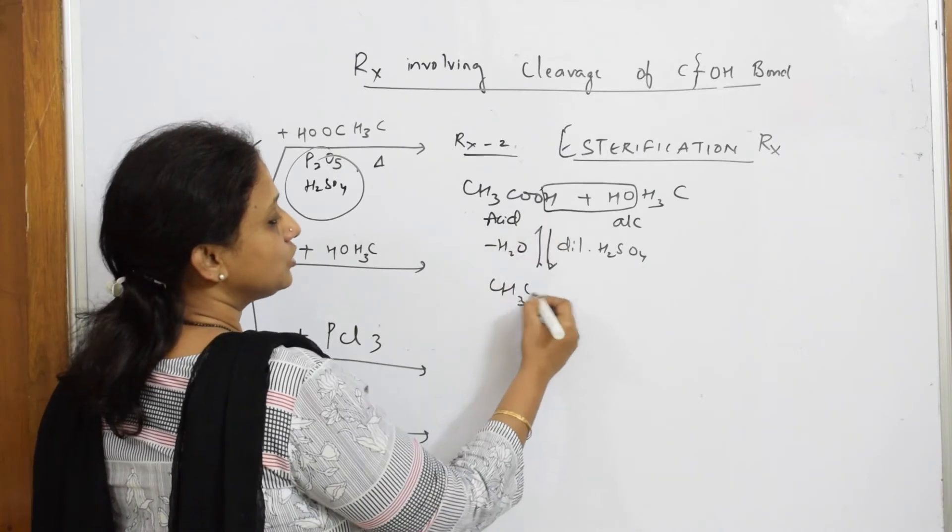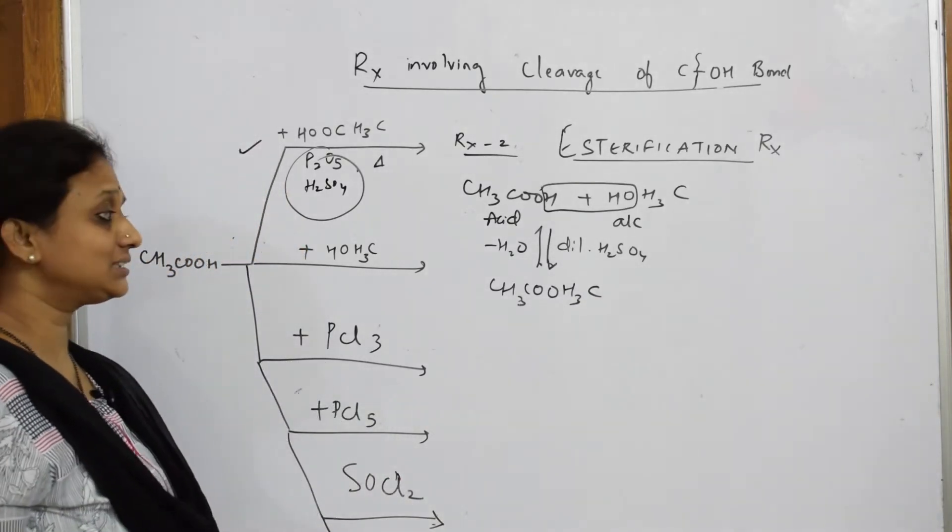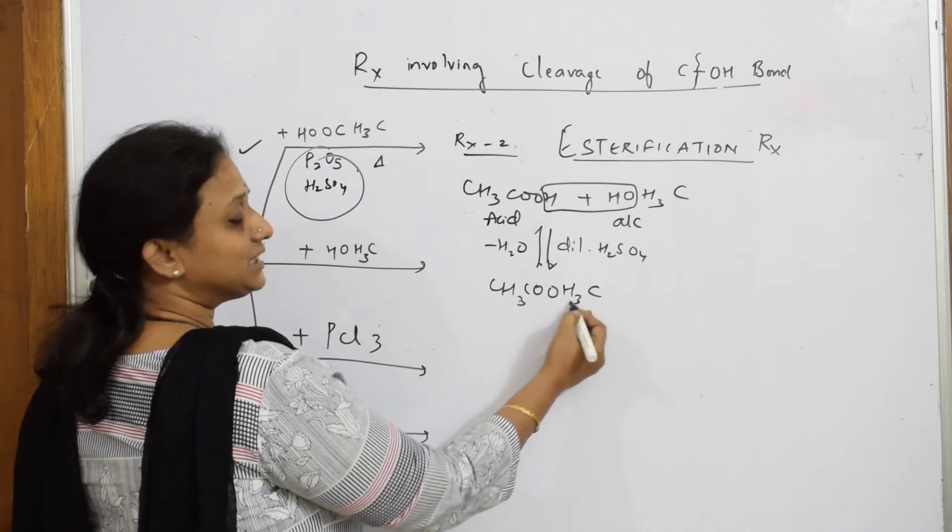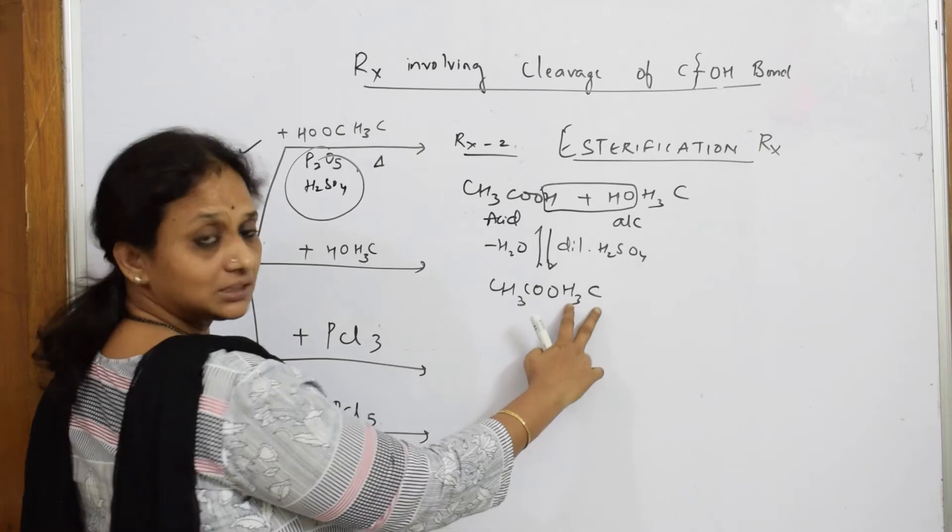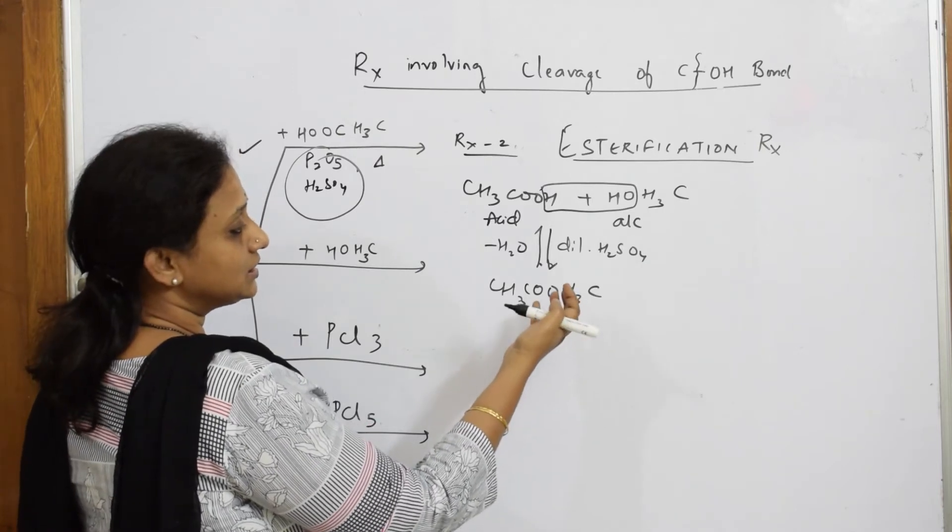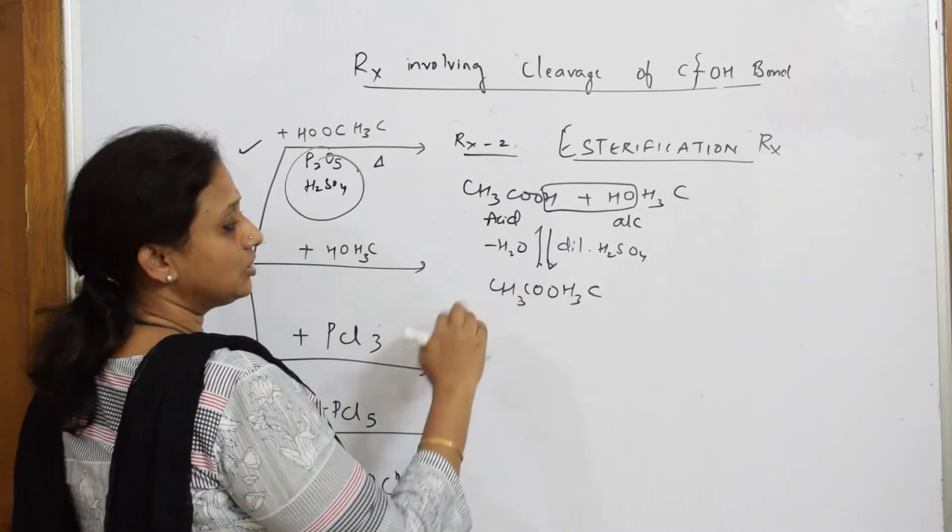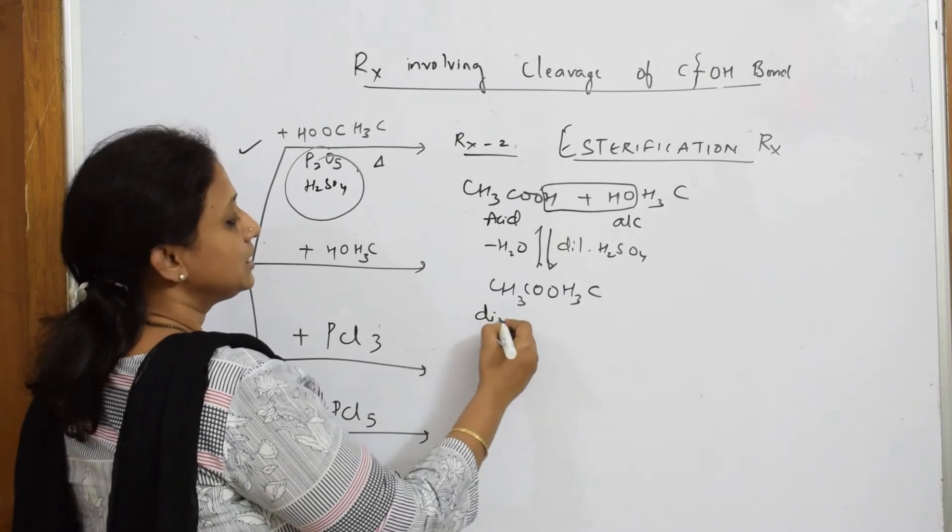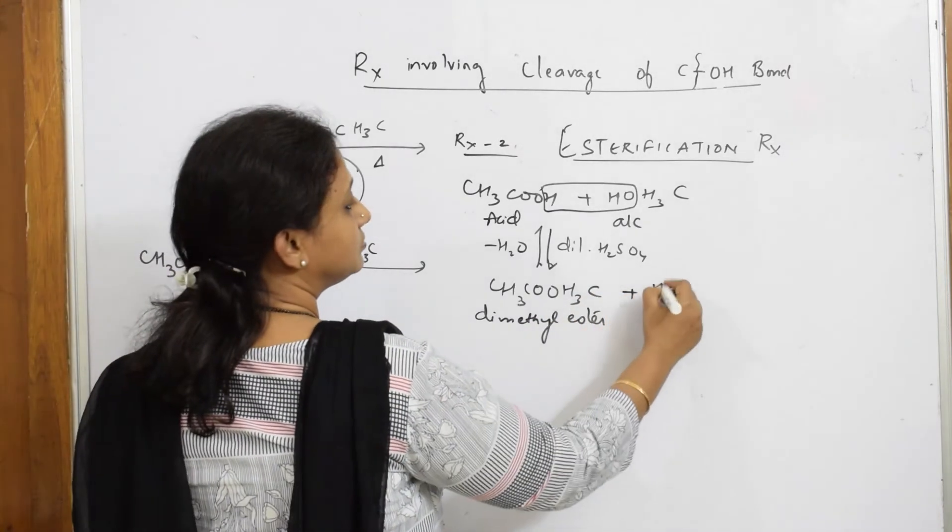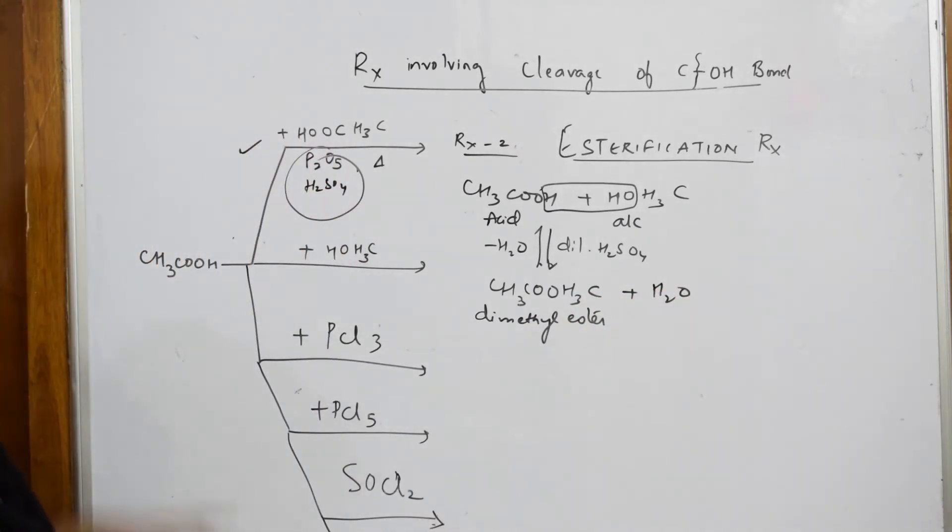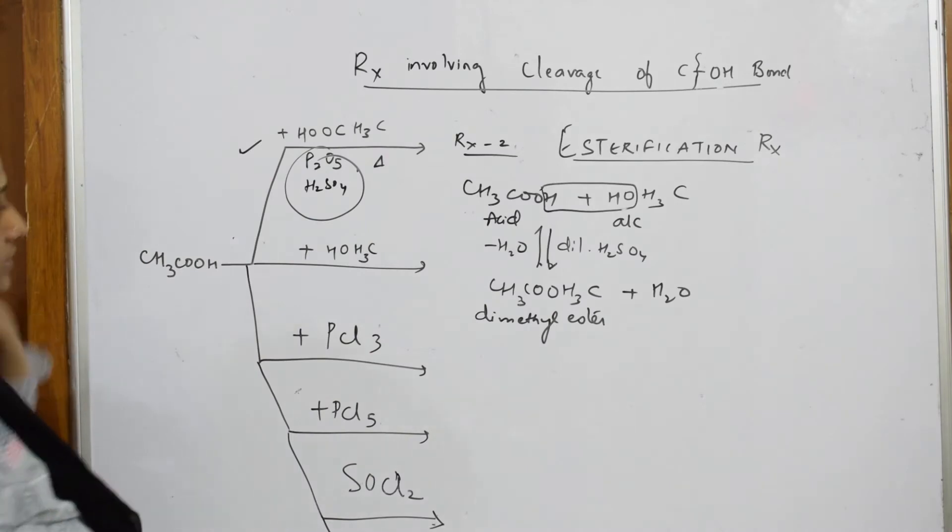Whatever you get: CH3, your CO group, and here - what is this group now? It is called ester. Which ester? This is methyl group. This is ethyl - there are two carbons here, ETH. This is methyl. Start: methyl ethanoate, or dimethyl ester. Anything will do. Plus water. This is one more cleavage where I cleave the bond at OH position. That's why it's coming under that category.